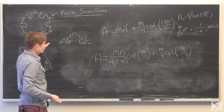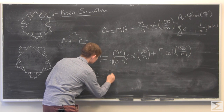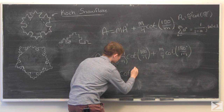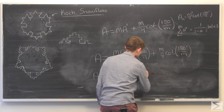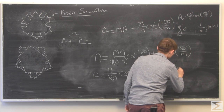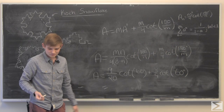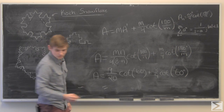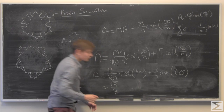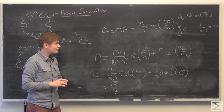When m and n are both equal to 3, which gives us the original Koch snowflake, A equals 9 over 20 times the cotangent of 60 degrees. The cotangent of 60 degrees simplifies so that the final answer is root 3 over 4. And so that's Part A. We did Part B, and that is this advanced knowledge problem of the week.